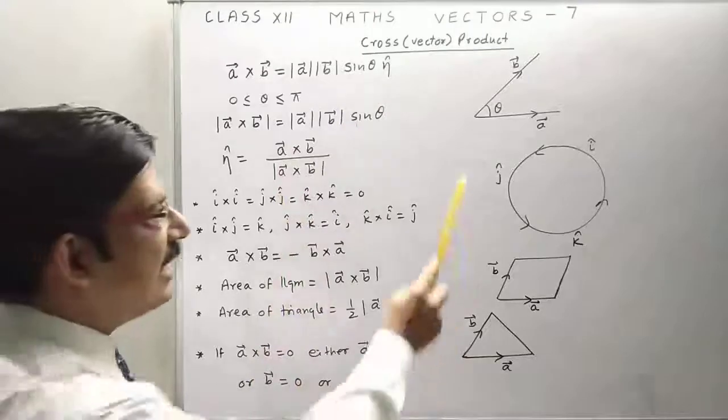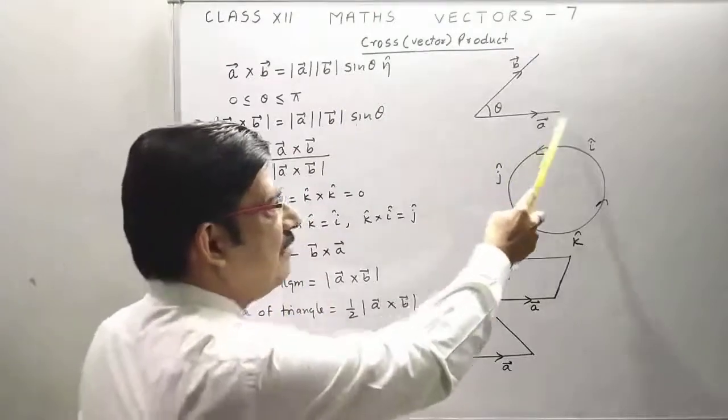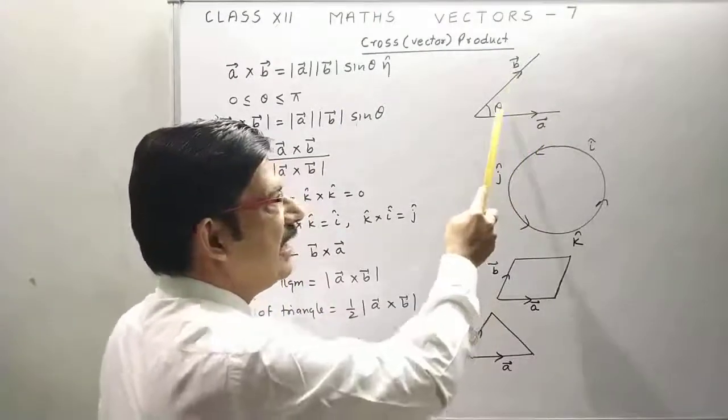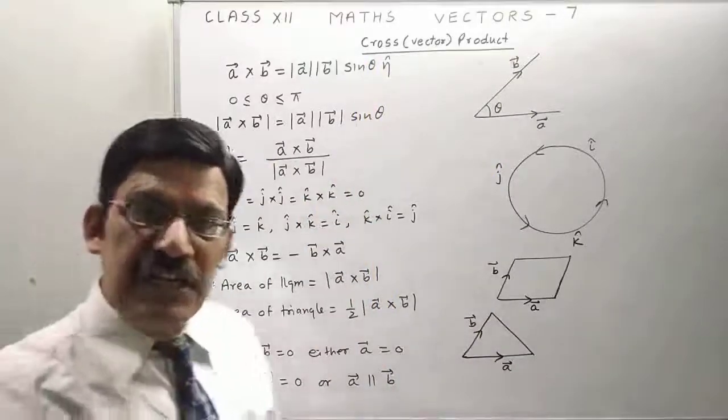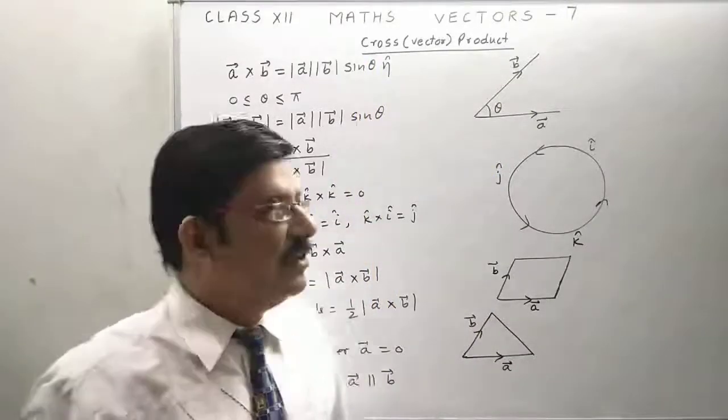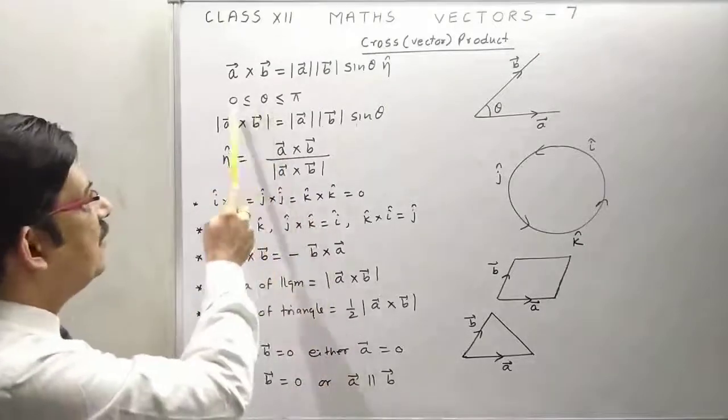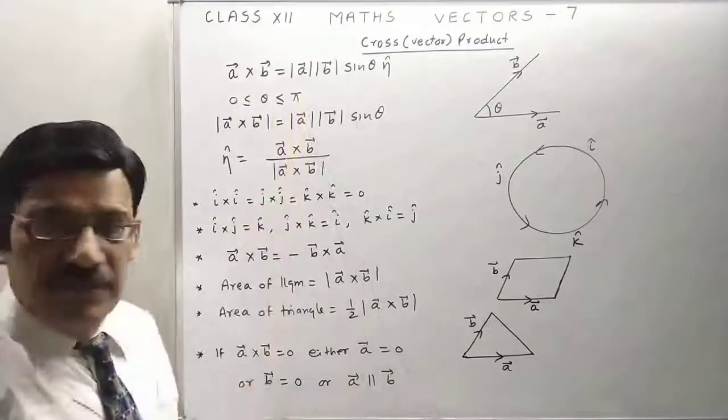Theta is the angle between them. As you can see in the diagram, vector a and vector B, the angle is theta. And this is eta. Eta represents the direction of a cross B. Now, theta lies between 0 to pi.